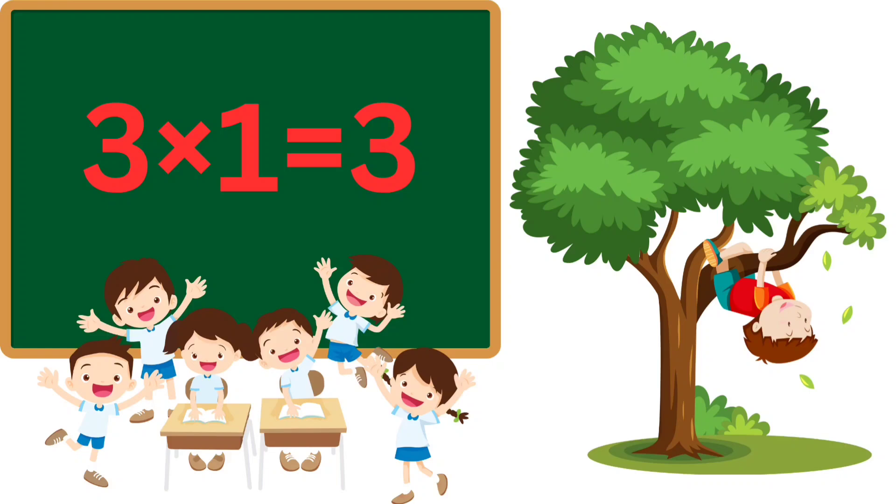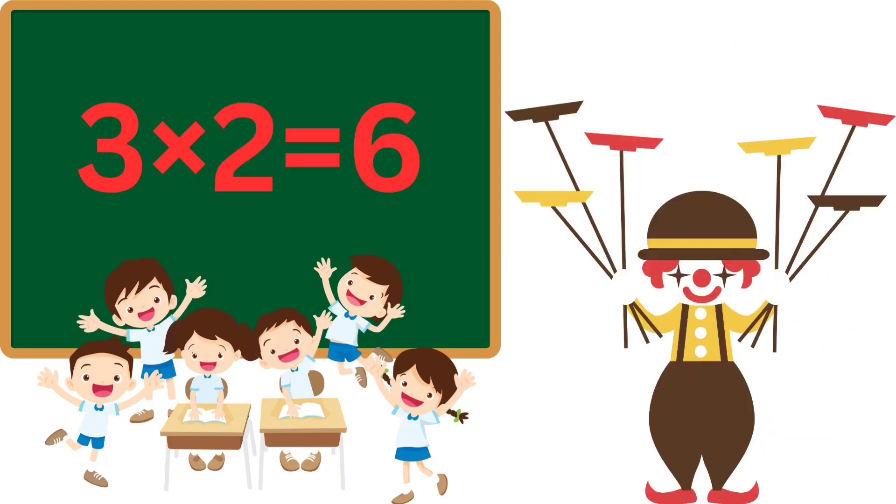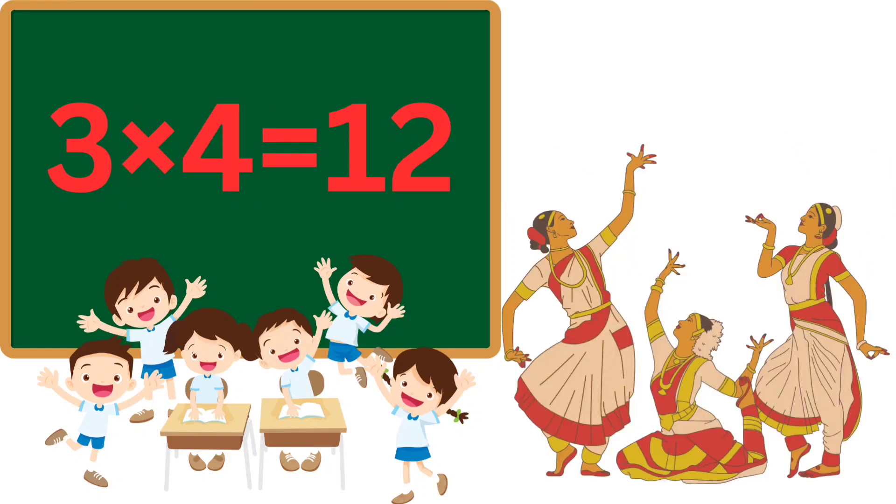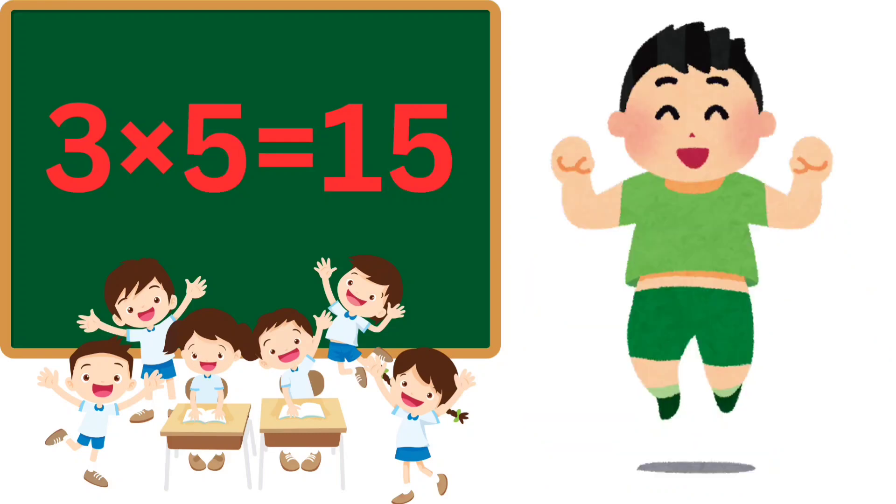3×1=3, climb a tree. 3×2=6, do some tricks. 3×3=9, feeling fine. 3×4=12, dance in a line.